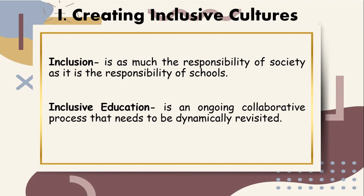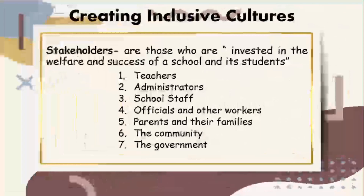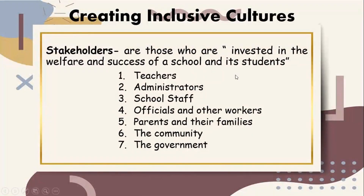For it to truly work, its essence has to resonate with all stakeholders of education. In educational reform, stakeholders are those who are invested in the welfare and success of a school and its students — in other words, the teachers, administrators, school staff, officials and other workers, parents and their families, the community, and the government. They may also be collective entities like local businesses, advocacy groups, the media, sociocultural institutions, and other organizations directly or indirectly involved in education. Stakeholders are important because they play a major role in connecting what is being taught in the school to its surrounding community.